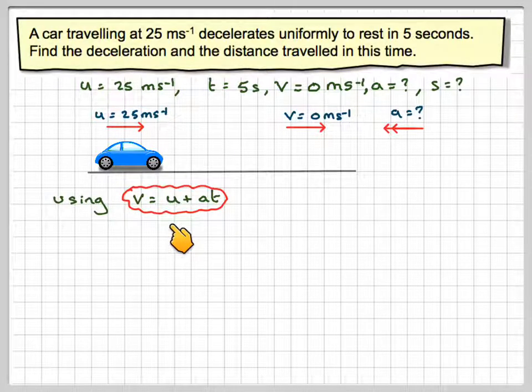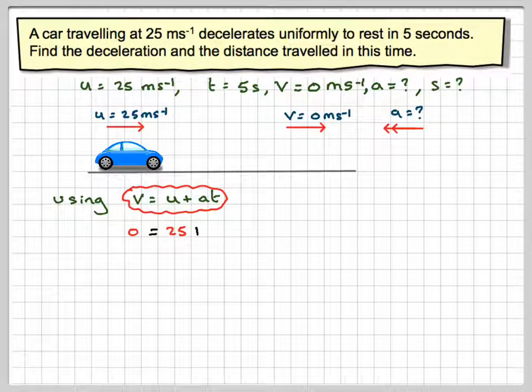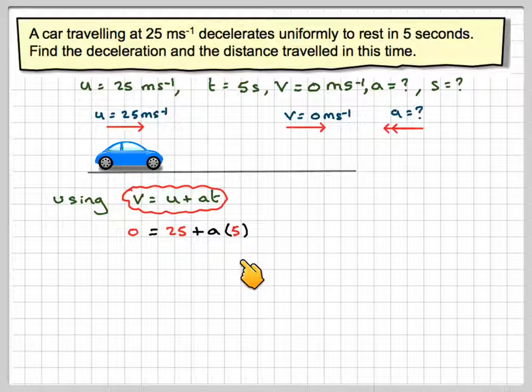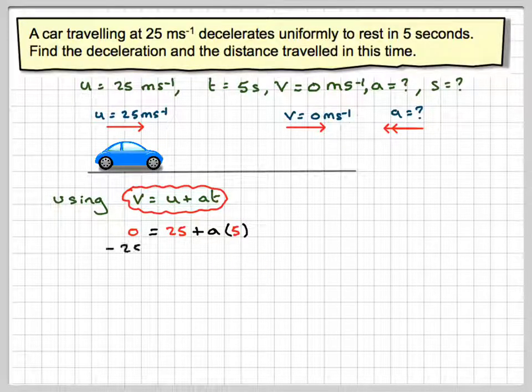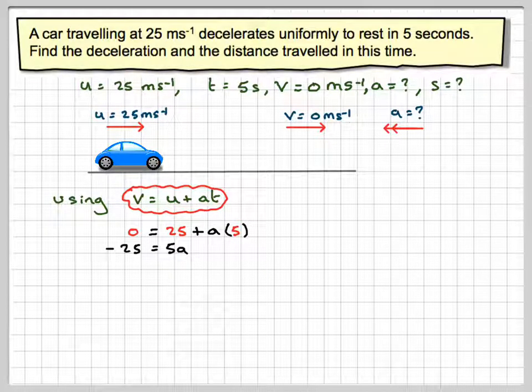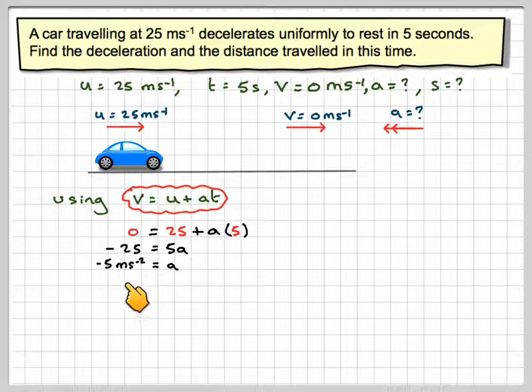Using V is equal to U plus AT, and therefore, 0 will be equal to 25 plus A times 5, because the time is 5. Rearranging that, we're going to get minus 25 is equal to 5A. And A is equal to minus 5 metres per second squared.